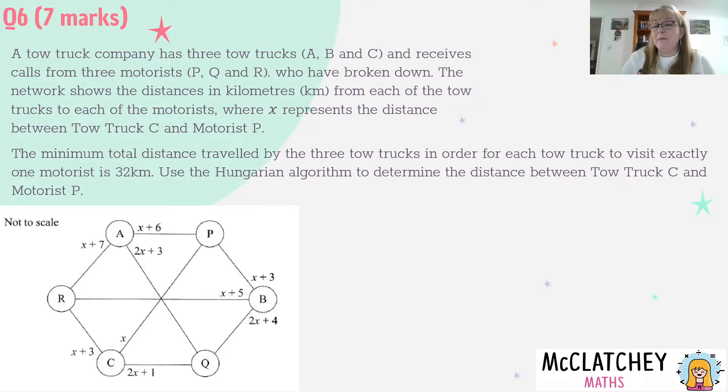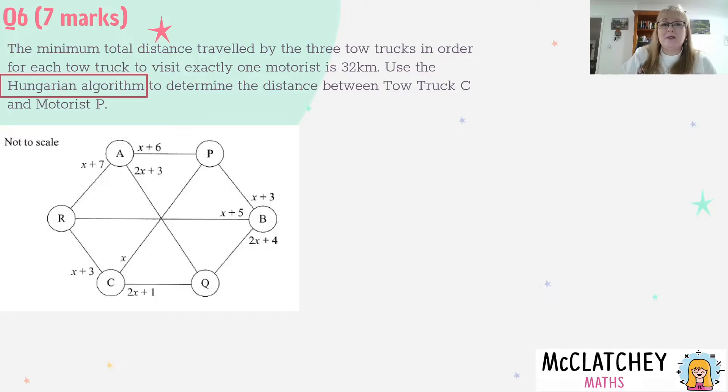That would be a possible way to work out the optimal allocation, however it's not the Hungarian algorithm. You'll notice in the question we're told what method to use. Now to use the Hungarian algorithm we need a matrix, so the very first step I think should be to set up a matrix using the information we've got.